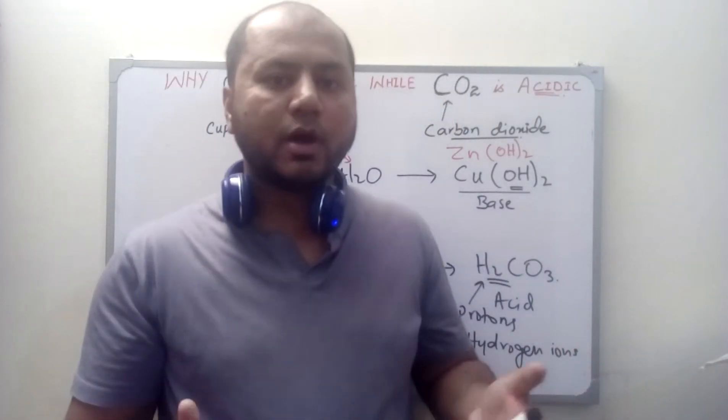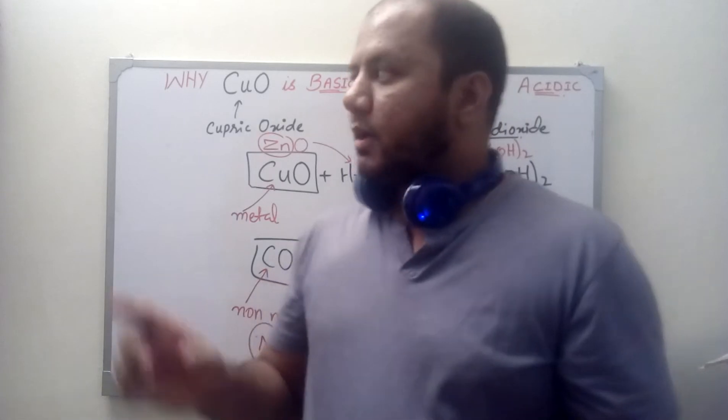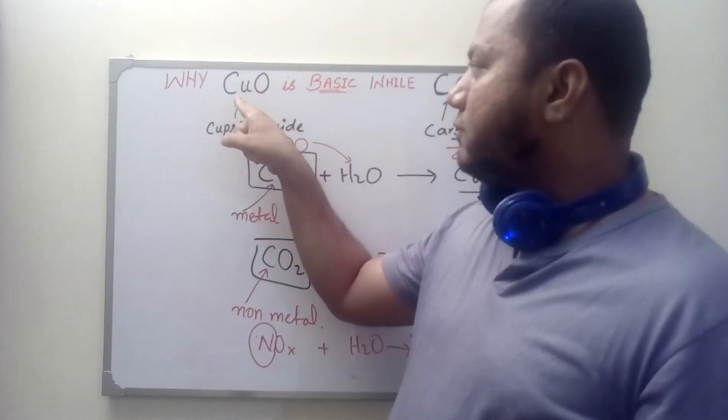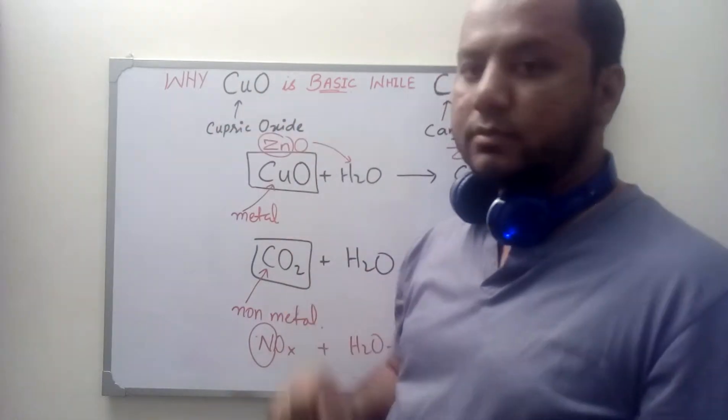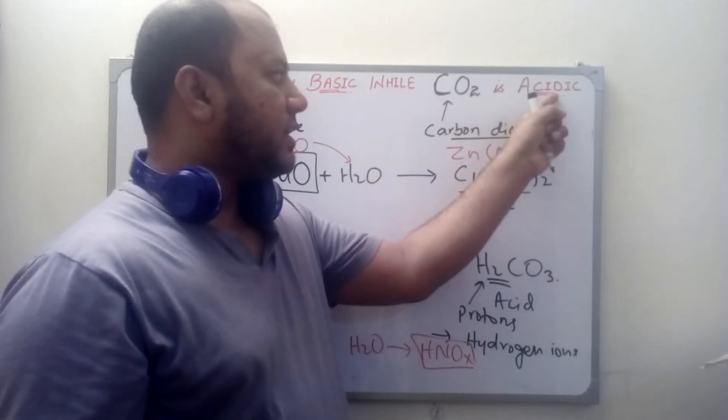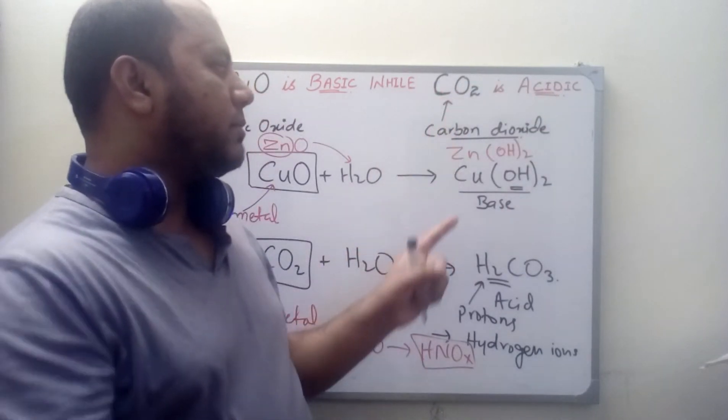So I think the problem is solved if you want to know why copper oxide is basic - because it gives you a hydroxide compound - and carbon dioxide is acidic because it gives you a compound which contains protons or hydrogen ions.